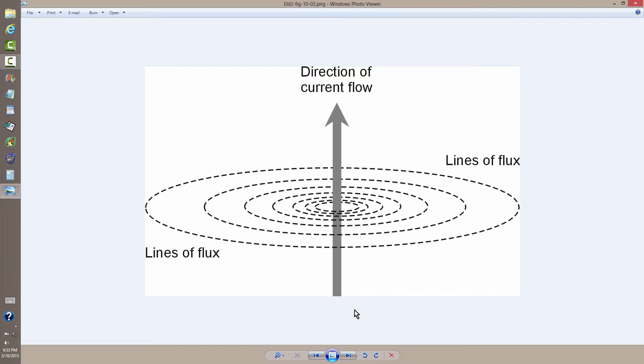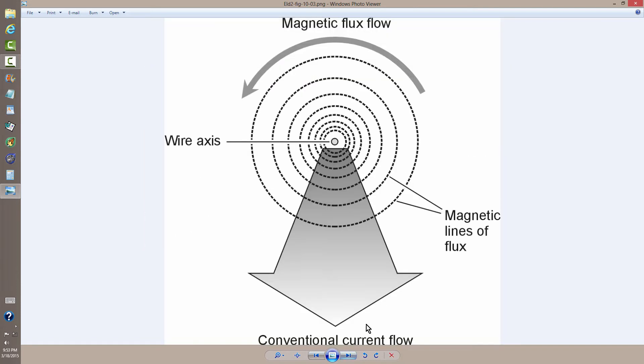We can actually determine the direction of magnetic flux by considering something called conventional current. That is, current that flows from plus to minus. Now why they call that conventional, when a lot of people have never even heard of it, is something beyond me. It's a historical artifact. But conventional current is what physicists generally use, and a lot of laws of electricity and physics and electronics are based on that.